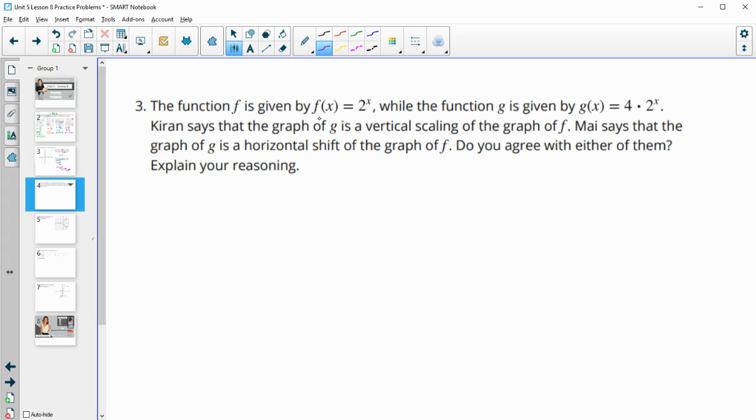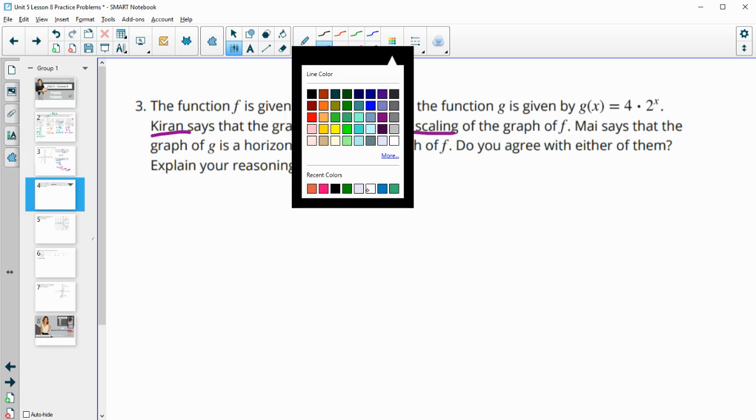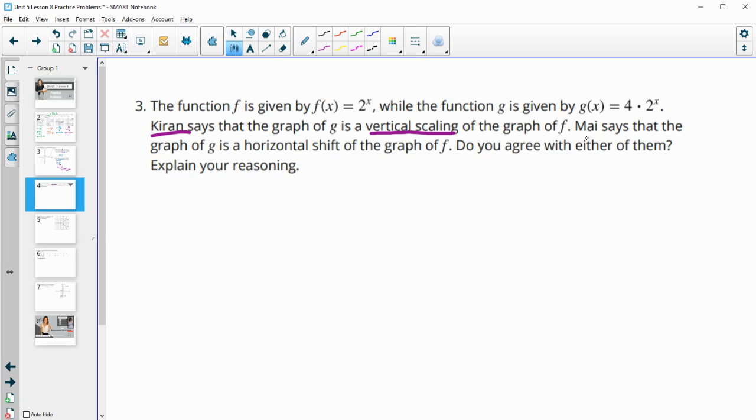Number three, the function f is given by f of x equals 2 to the x and the g function is given by 4 times 2 to the x. Kyron says that the graph of g is a vertical scaling of the graph of f, and Mai says that the graph of g is a horizontal shift of the graph of f. Do you agree with either of them? Remember, a vertical scaling would mean that g of x is equal to some number, in this case 4,